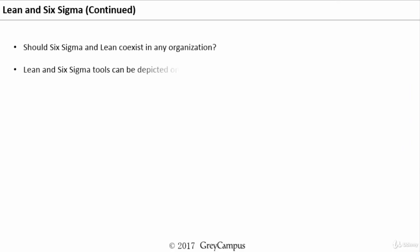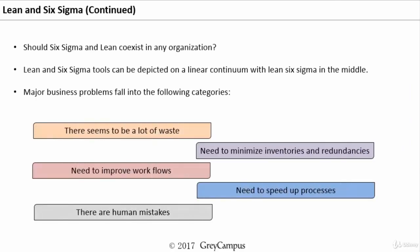This is a one-to-one comparison of when we take up Six Sigma projects and when we take Lean projects. Now one interesting question is whether Six Sigma and Lean can coexist in the organization.